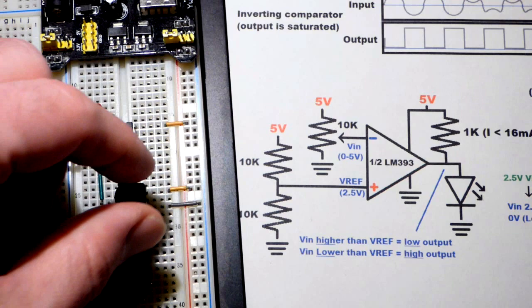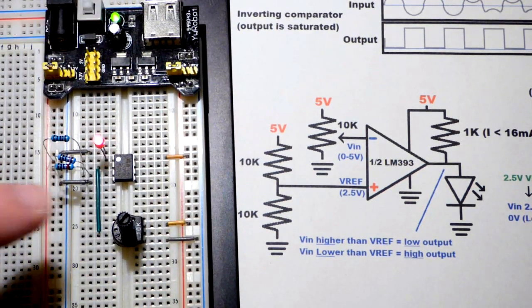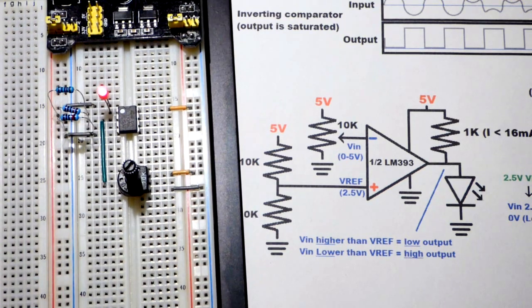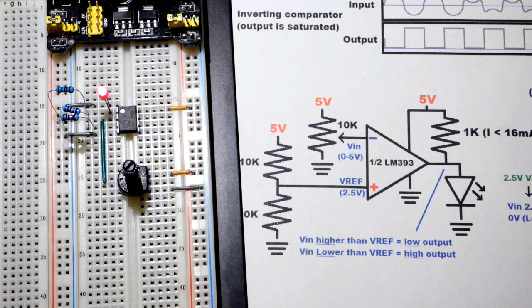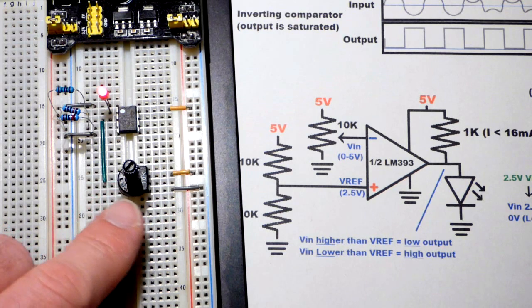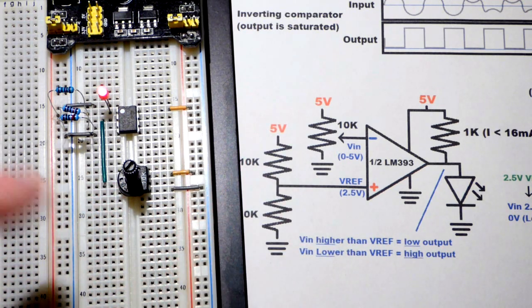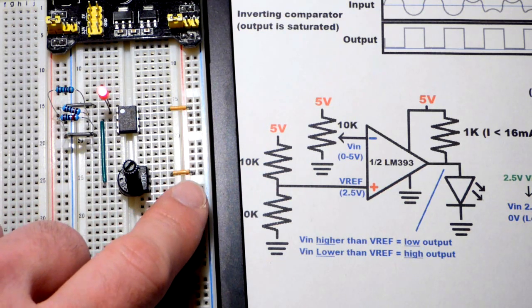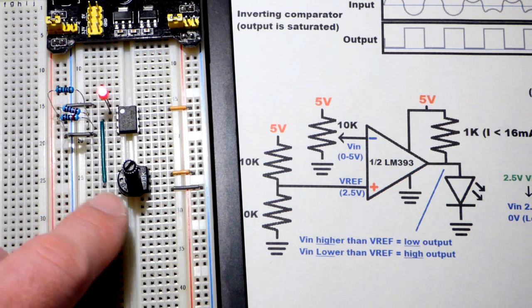We will turn the trim pot down towards negative a little bit and then turn the power supply on. Now you can see that the output is on. The LED is on and is wired to be turned on when there's a higher voltage at the output. The trim pot is a voltage divider. We can set the voltage from between 5 volts positive rail to 0 volts negative rail.